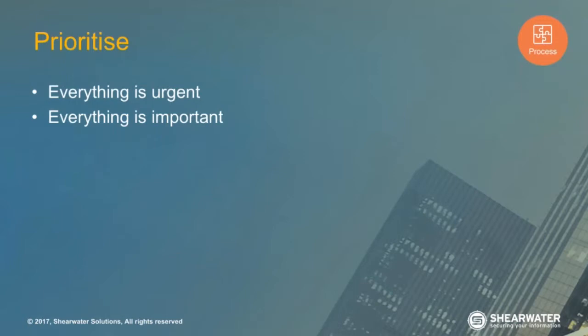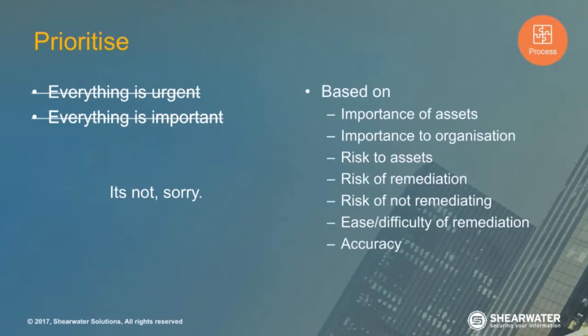The next thing we do is prioritise. In every environment, everything feels urgent and important - I hear your pain. But realistically, it's not. There are things that need to be fixed first, so you need to prioritise everything identified in a sensible way. We look at the importance of the assets and the importance to the organisation. Is this a system where if it's down or compromised it's game over, or is it something like a telephony scheduling system that might not be that important?